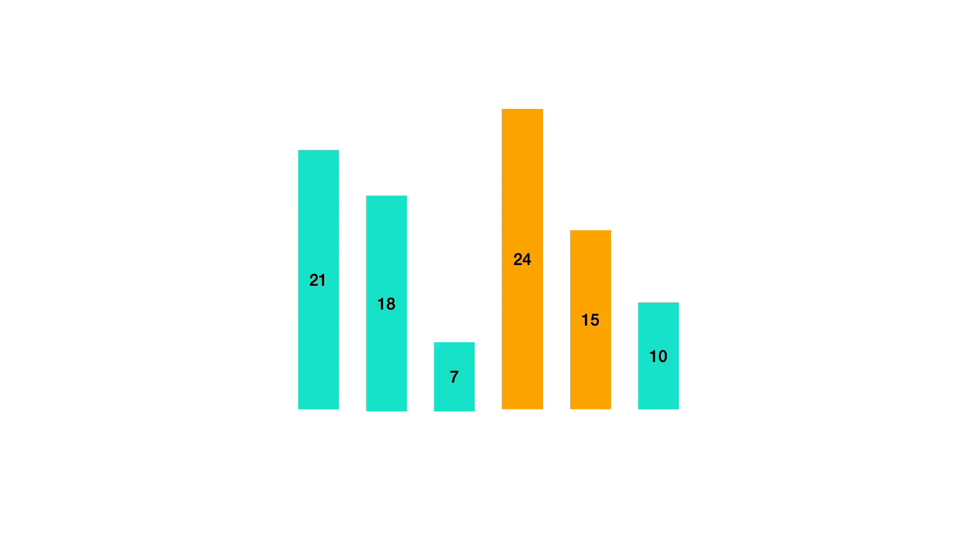After each iteration, the largest number bubbles its way to the right of the array. After the first iteration gets completed, 24 will be moved to the right of the array.